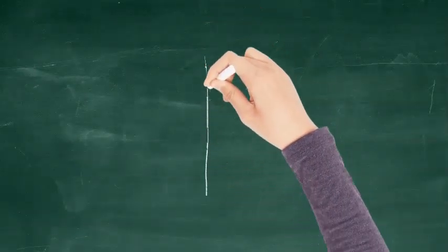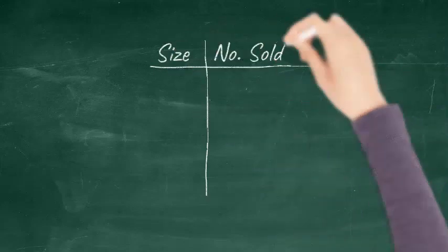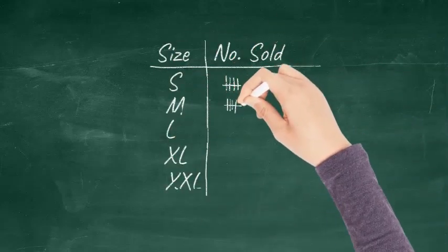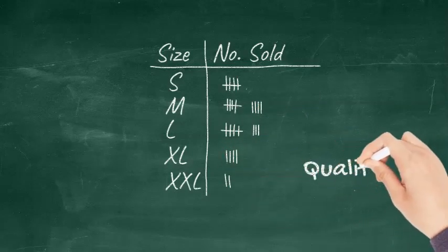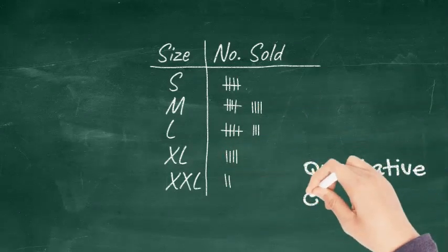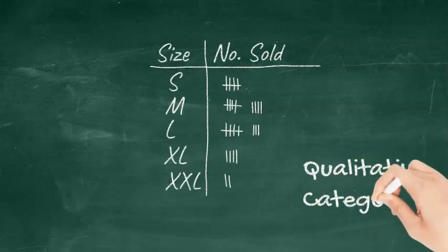In this second example, we are going to construct a tally for the sizes of school sweatshirts sold this year. This time the categories are relative to one another. We count how many sweatshirts are sold of each size, as a tally as before.